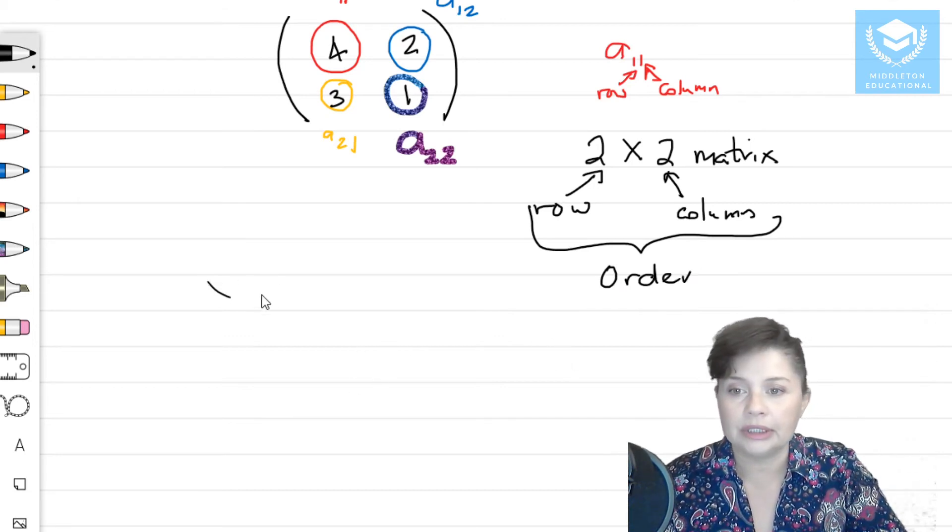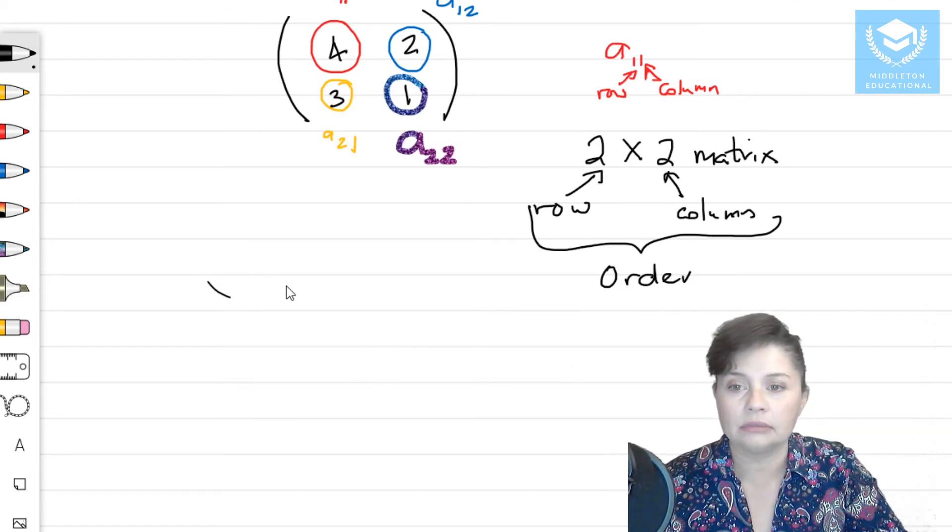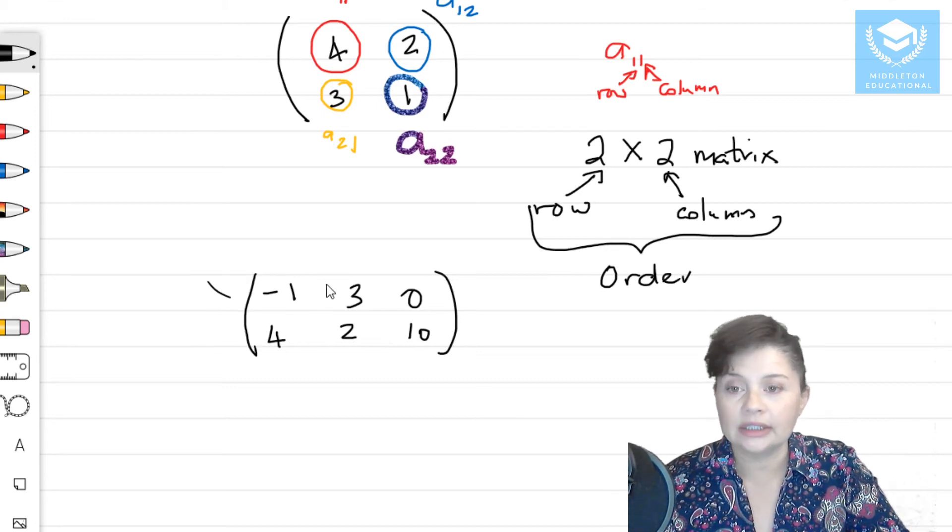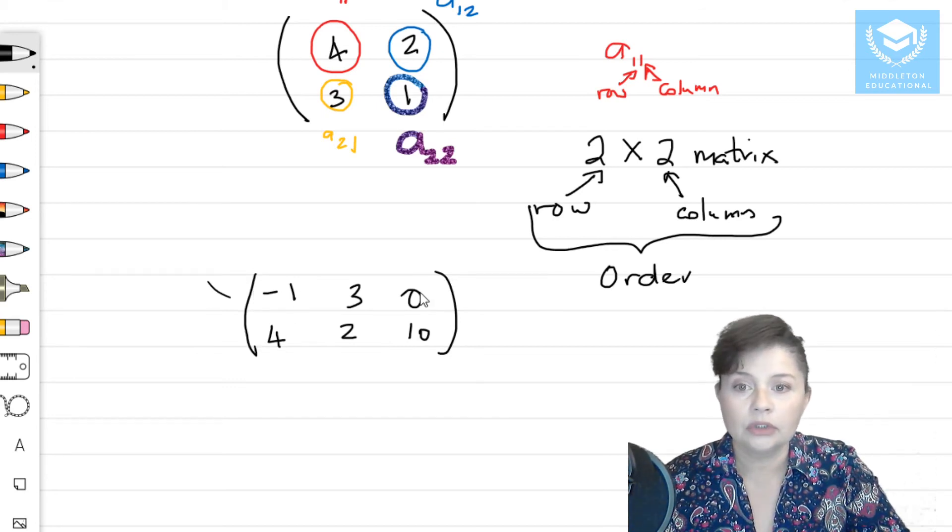So another example would be, say we have minus 1, 3, 0, 4, 2, and 10. Right? So what you've got here is you have two rows and three columns.